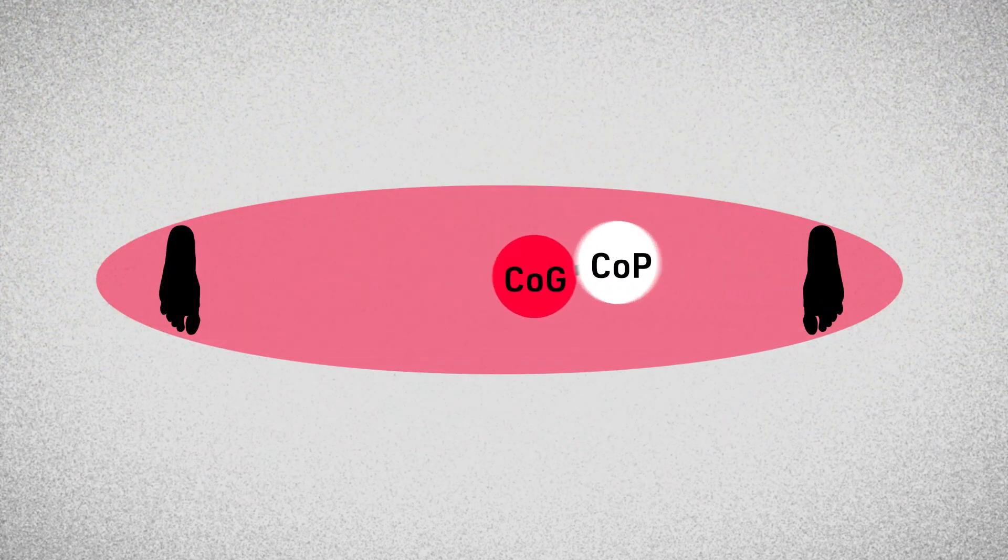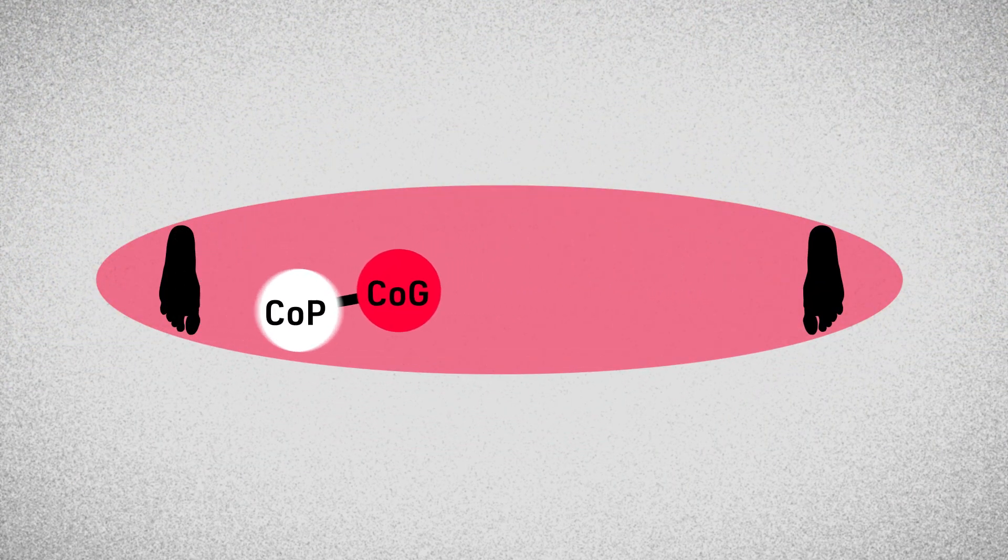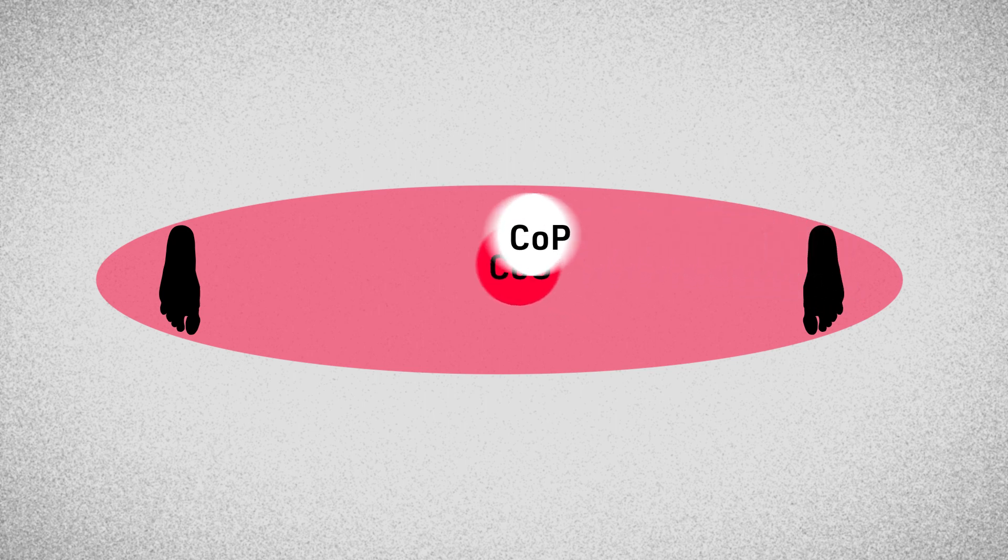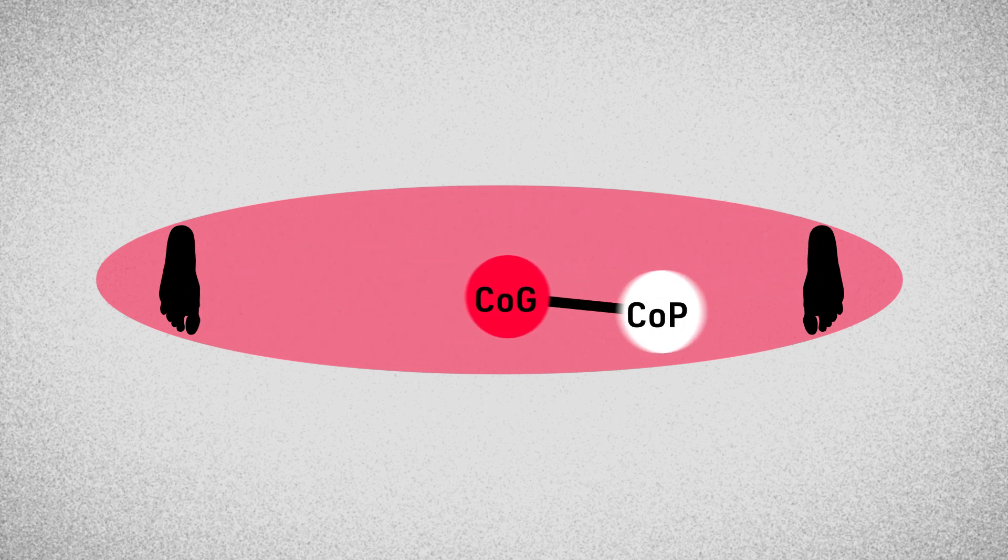The larger the distance from the center of pressure to the center of gravity, the less stable a person is and the more likely they'll be to fall.